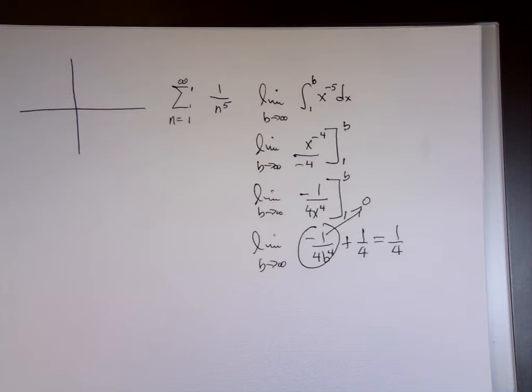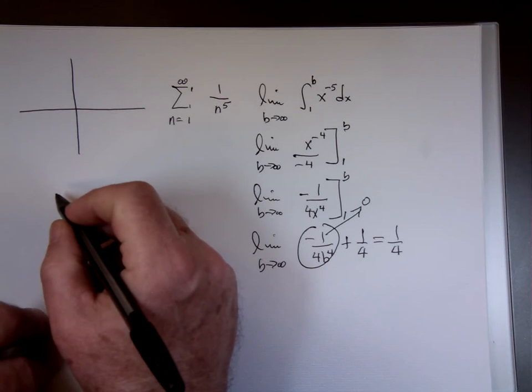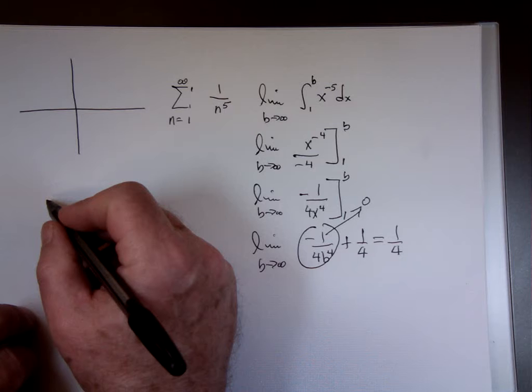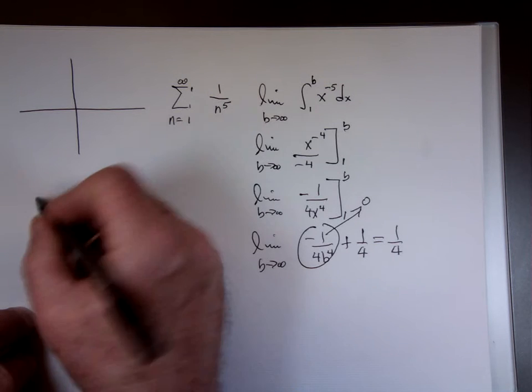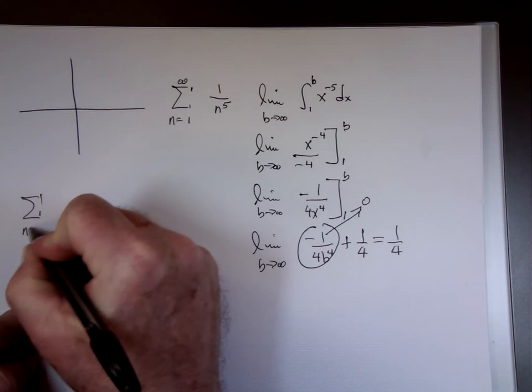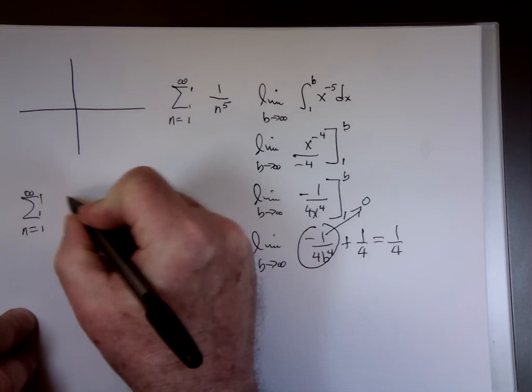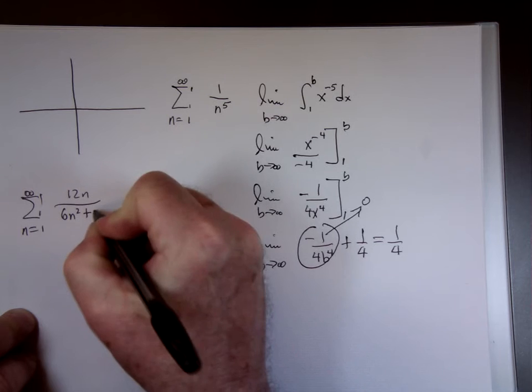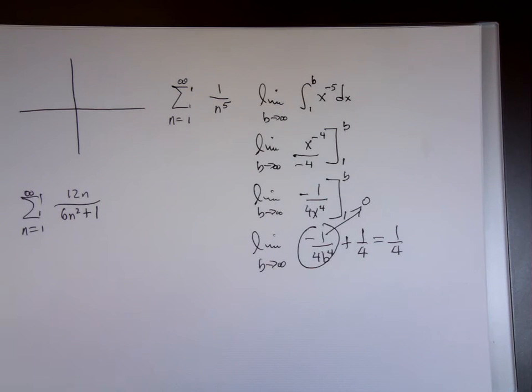Yeah, go ahead. It's another integral test. Okay, it's confirmed that the integral test can be applied to the series, then use the integral test to determine the convergence or divergence. For the sum n equals 1 to infinity, 12n over 6n squared plus 1. 12n over 6n squared plus 1? Yeah. Okay, that's it right there. Alright, let's take a look.